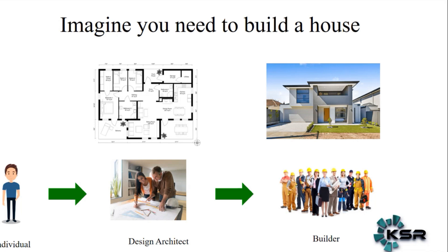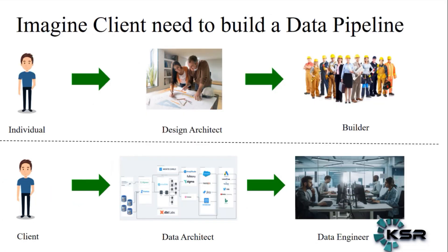Now mapping this to our roles: the client is asking for a data pipeline. The person who designs the house plan is the data architect. This person helps in building the plan — where exactly the data should move from, which orchestration layer to use, and how to scale it if data grows huge in future. And just like the builders who construct the house, the data engineers are the actual builders who build the pipeline for you.